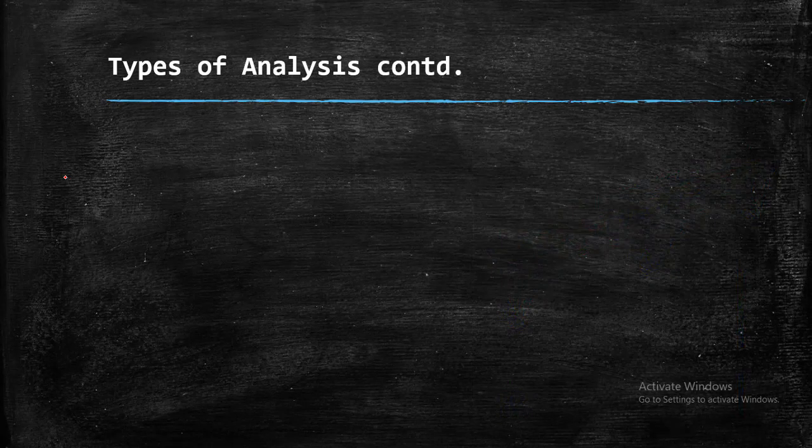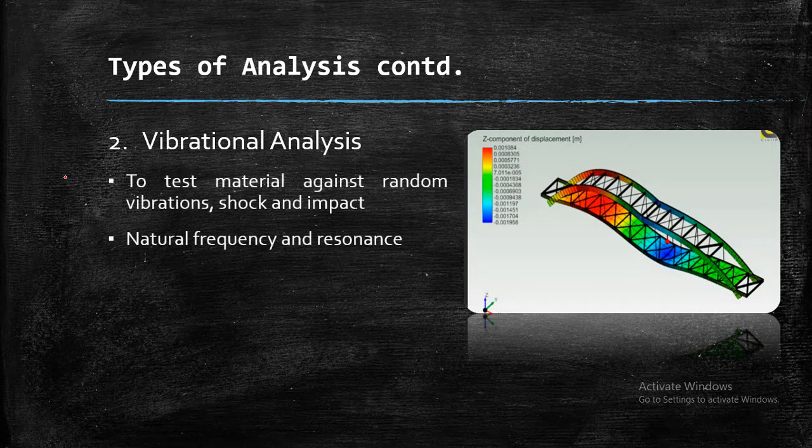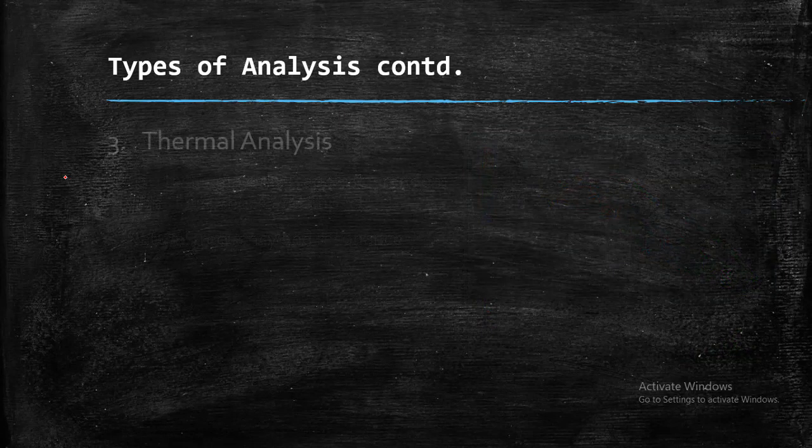Now coming to the next type of analysis, that is vibrational analysis. The name will be giving you the idea that the design engineer has to design the structure so that it should sustain the vibrational forces acting on that structure to test the material against random vibrations, shock and impact. So designer has to take these things in consideration. While doing so, the designer should be aware of natural frequency and resonance. Whenever the frequency reaches near to the natural frequency or it matches the natural frequency, the resonance occurs. Whenever the resonance occurs, there is turbulence. There are violent vibrations occurring and because of that, there is a possibility that the structure will get failed. So the designer has to take care of these things. So here also FEA plays a vital role.